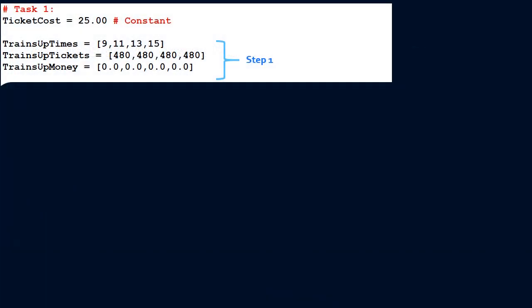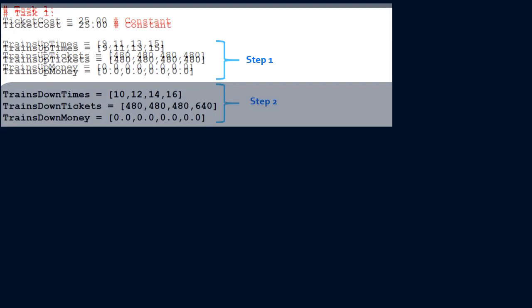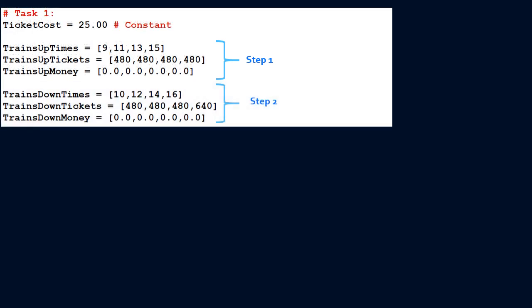We followed three simple steps to create the start-of-day display. You can have a constant ticket cost equals 25, which we'll refer to in Task 2. In Step 1, we declared three arrays: train up time, train up tickets, and train up money. In Step 2, we declared three more arrays: train down time, train down tickets, and train down money.